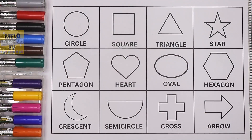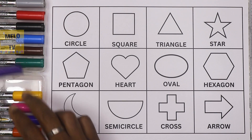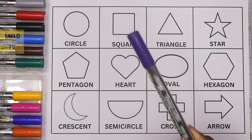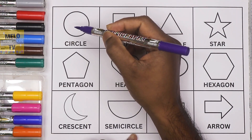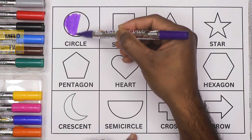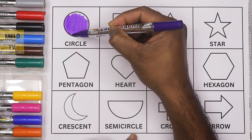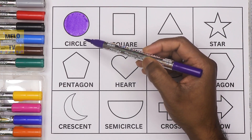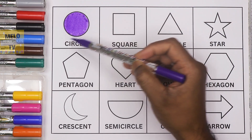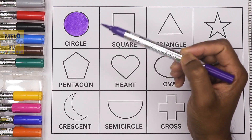Hello kids, today in this video we'll learn shapes and colors — 12 shapes and 12 colors. Let's get started. First I'll take purple color — this is purple color — to color this shape. This is a circle. So this is now a purple circle. The color is purple and the shape is circle.